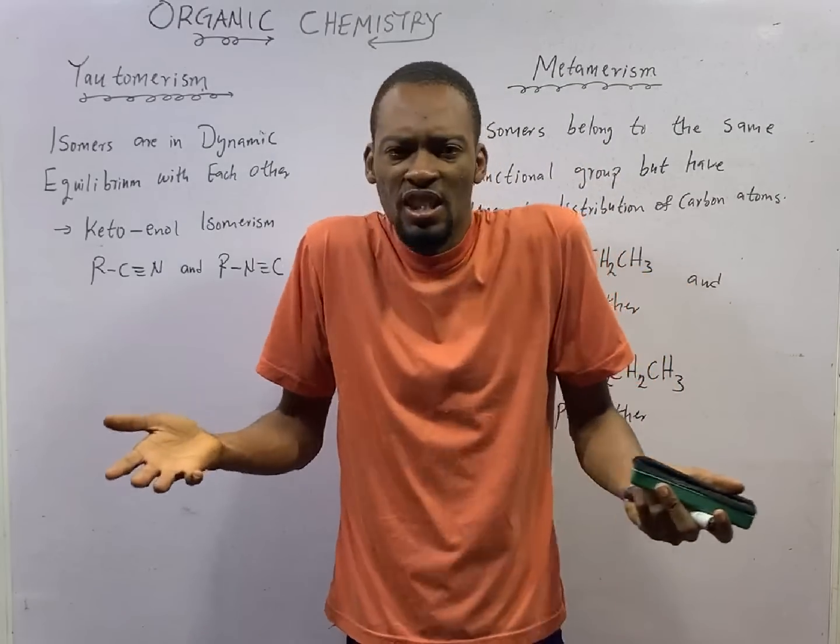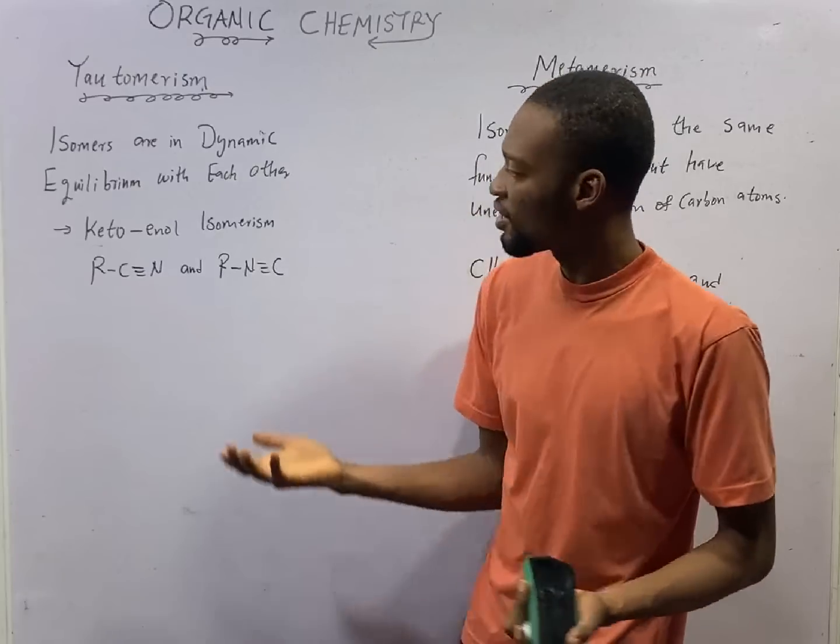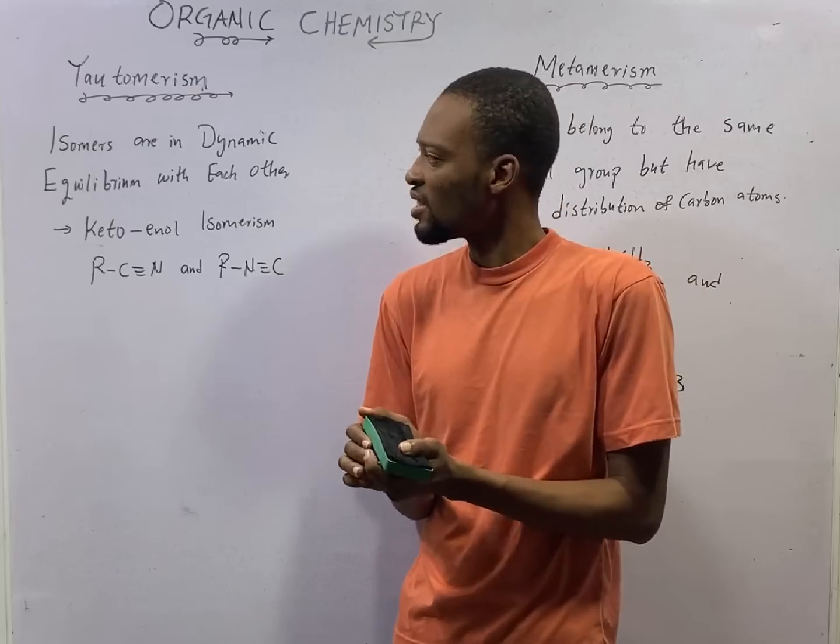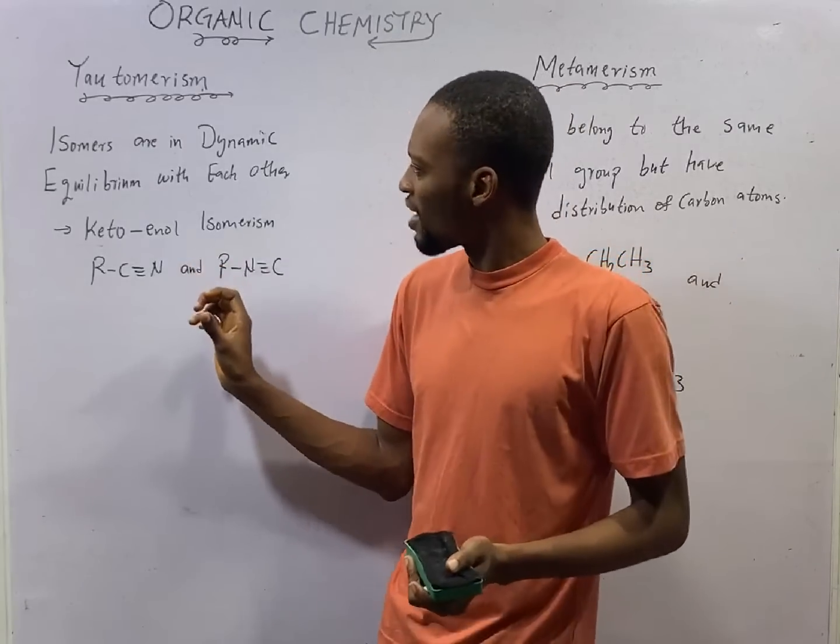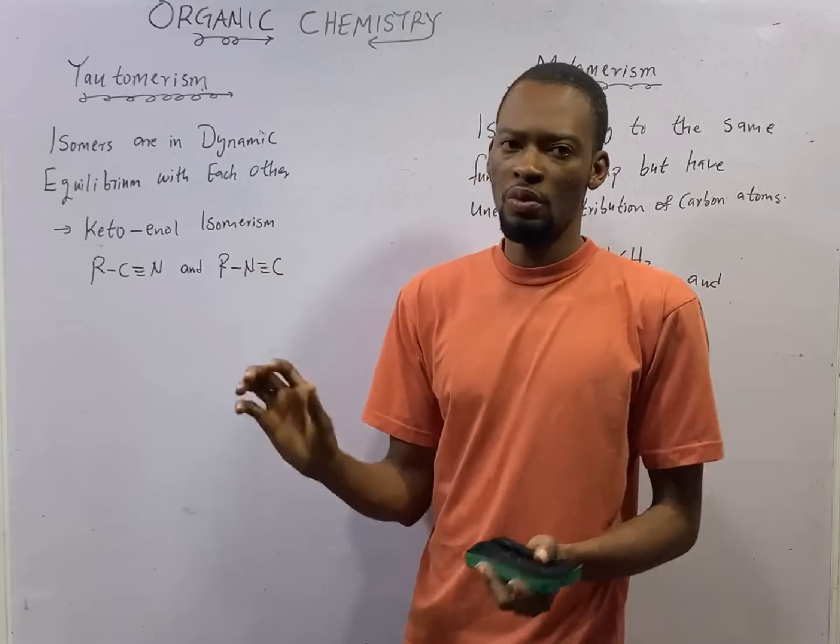JAMB doesn't expect you to know much under Tautomerism or Metamerism. What you should simply know under Tautomerism is that the isomers are in dynamic equilibrium with each other.